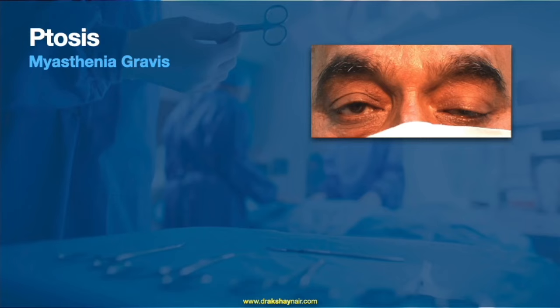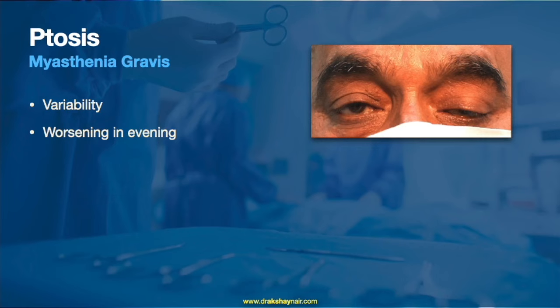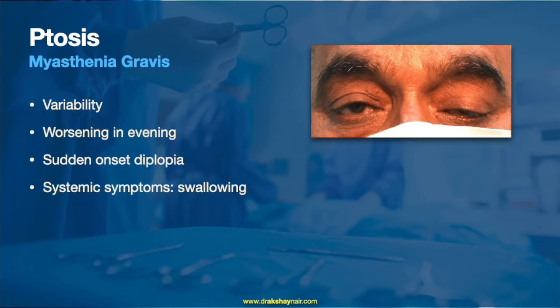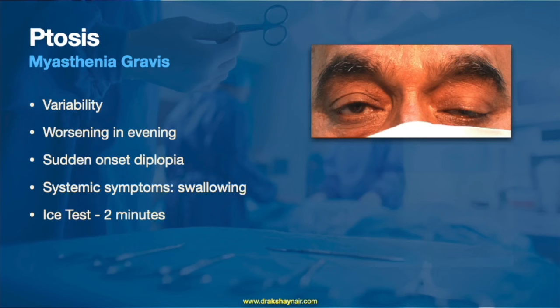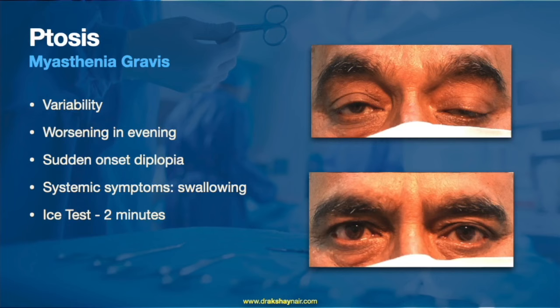Myasthenia gravis is an important condition that can present as unilateral or bilateral ptosis at any age. Red flags include a history of variability in ptosis that worsens in the evening, sudden onset diplopia, and systemic symptoms such as difficulty swallowing solids. These patients should undergo an ice pack test: an ice pack is placed over both eyes for 2 minutes, and an improvement of 2 mm or more in palpable fissure height is a positive result. This test has a sensitivity of 90% and above.